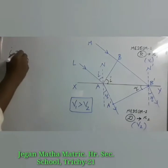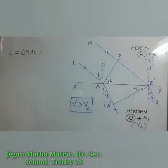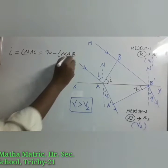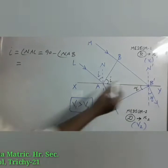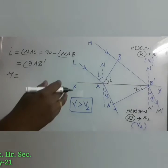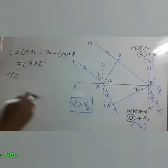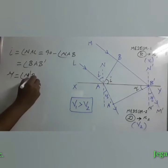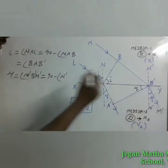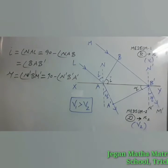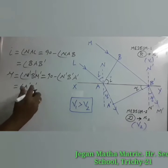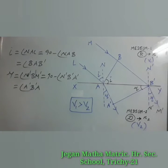Now we can write the angle of incidence i. Directly, angle NAL equals 90 minus angle NAB, which equals angle BAB'. Likewise, the angle of refraction r equals angle N'B'M', which equals 90 minus angle N'B'B', which equals angle A'B'A. We have to prove that these angles correspond to i and r in the triangles.